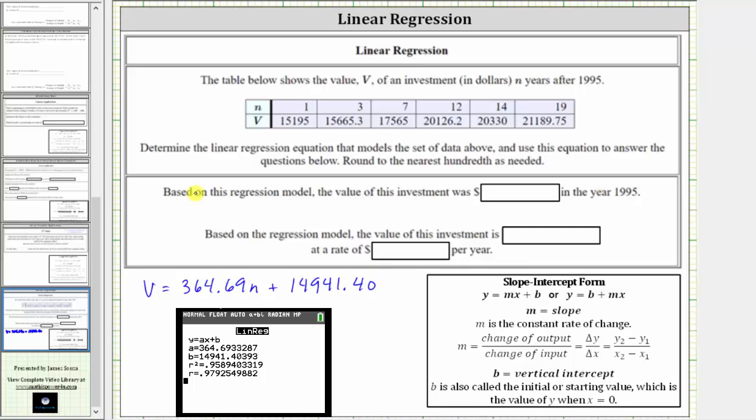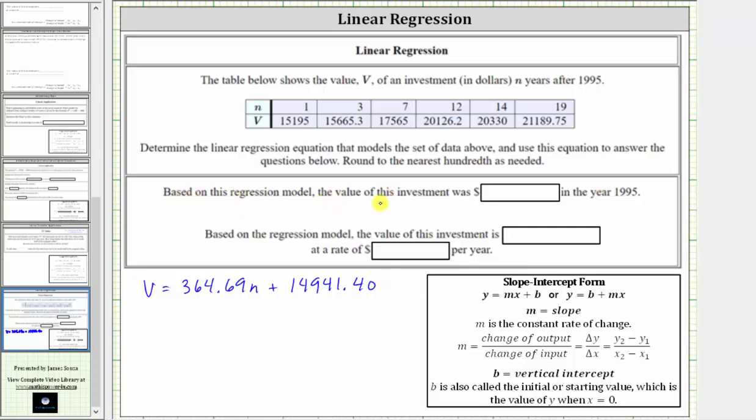And now let's complete the statements below. Based upon this regression model, the value of this investment was how many dollars in the year 1995? Well, notice that n is the number of years after 1995, which means for the year 1995, n is zero.